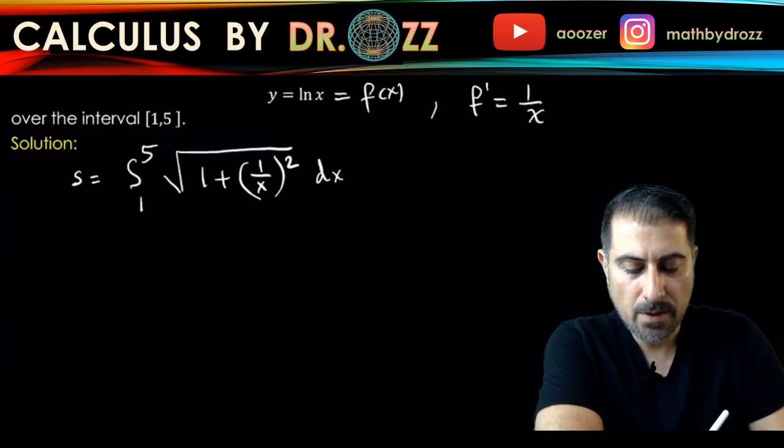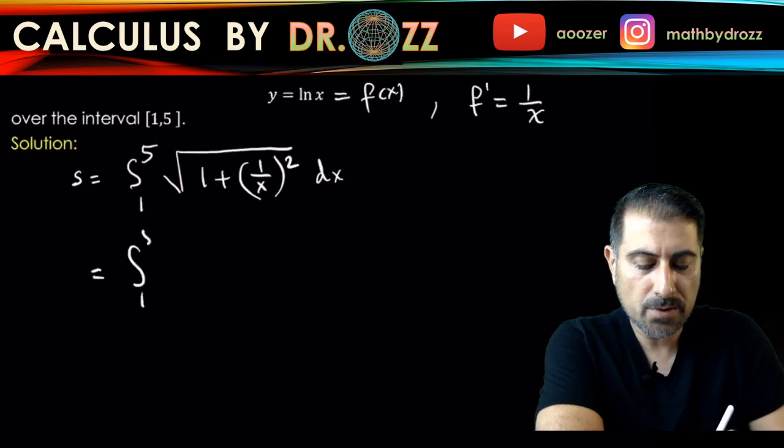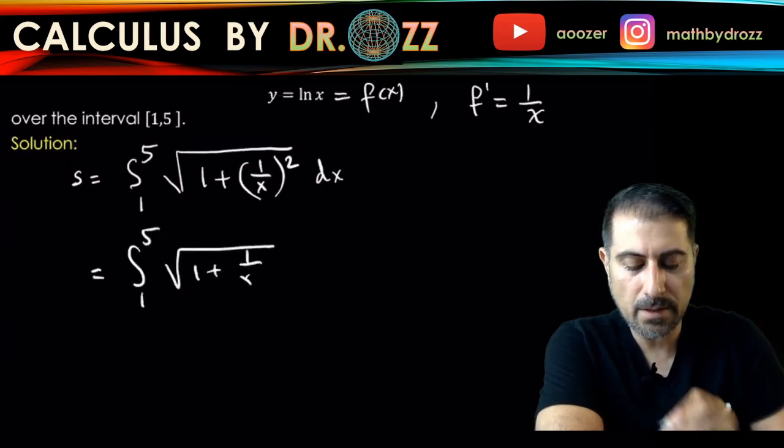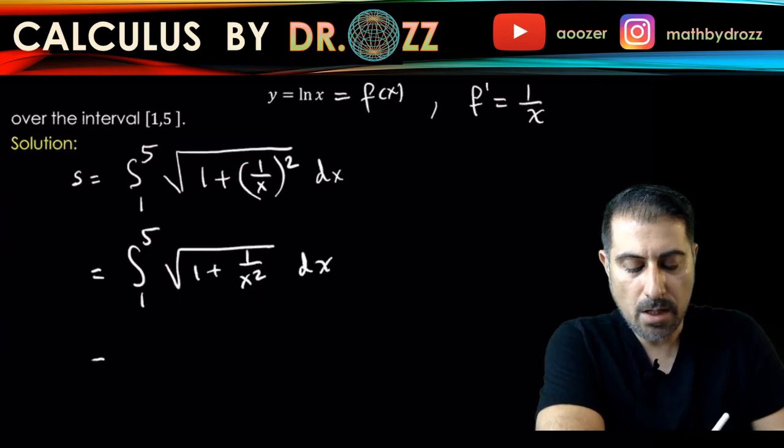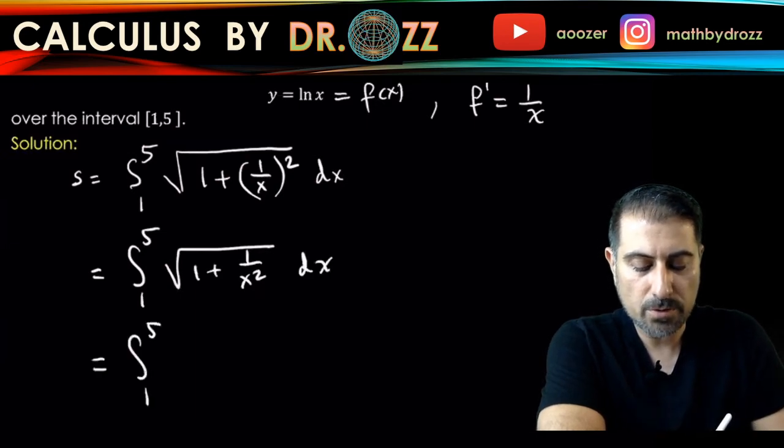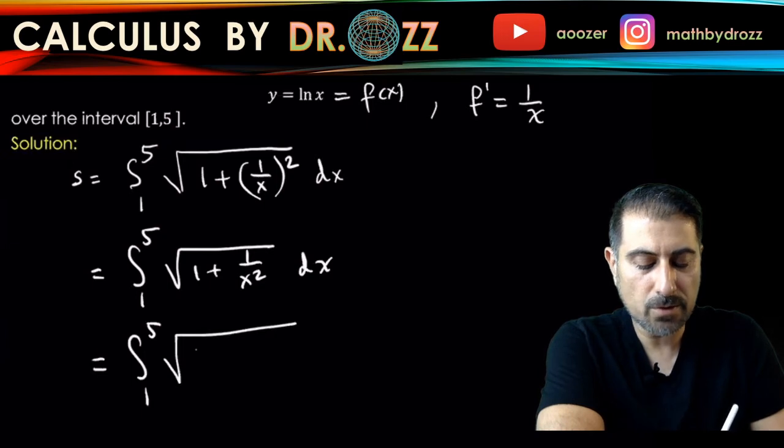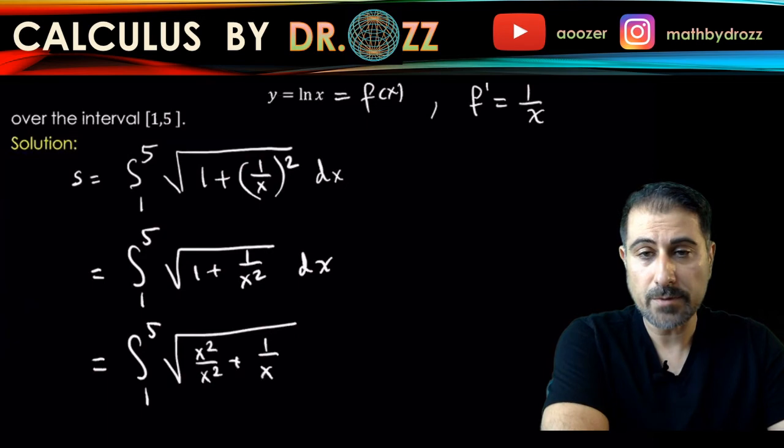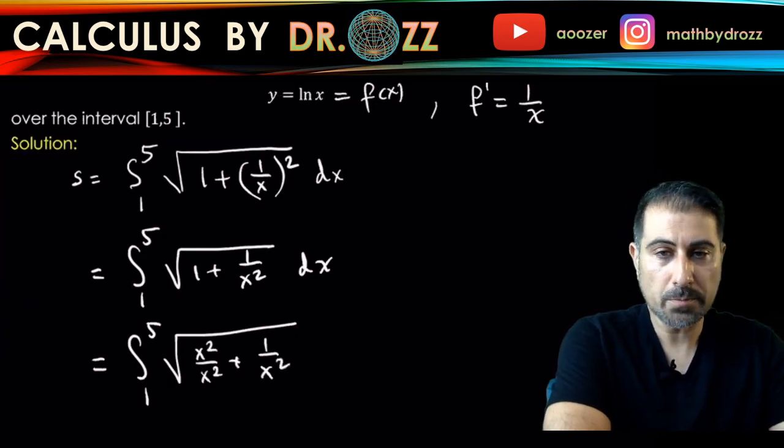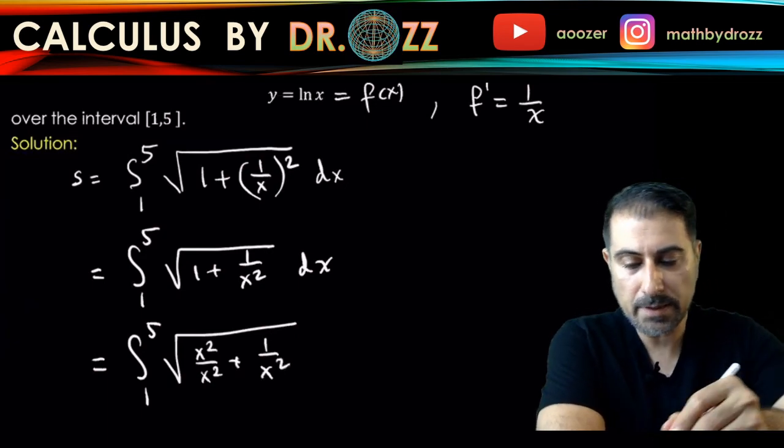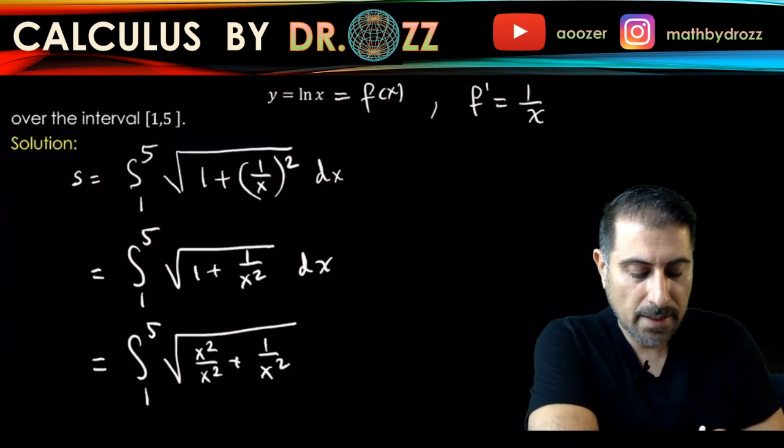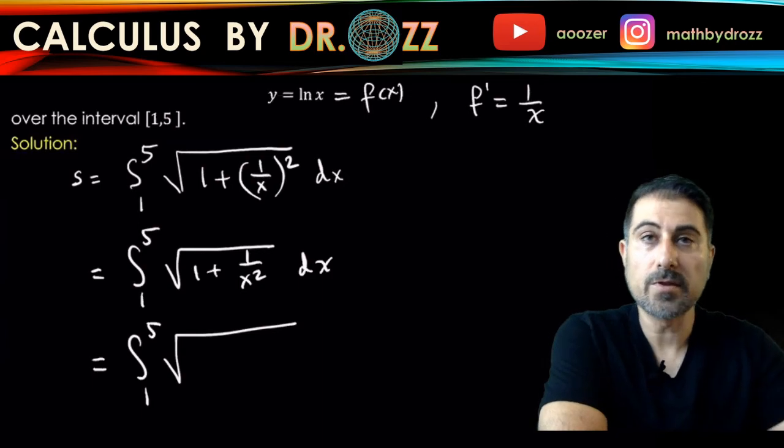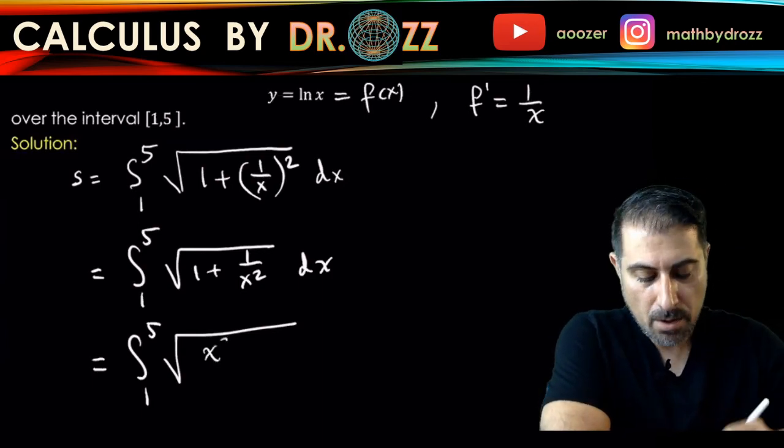I'm going to go from 1 to 5, 1 plus 1 over x squared dx, integral from 1 to 5. Let's just simplify this more. So this is x squared over x squared plus 1 over x squared. So instead of 1 in the sum, I wrote x squared over x squared plus 1 over x squared. But that is also written as x squared plus 1 over x squared.